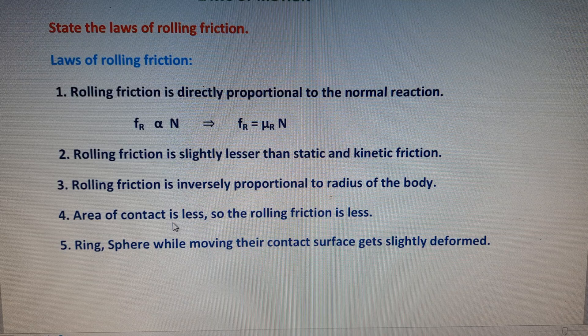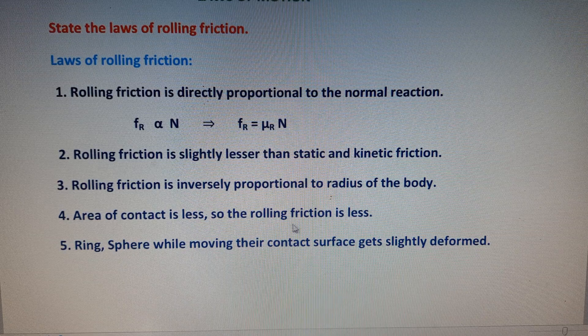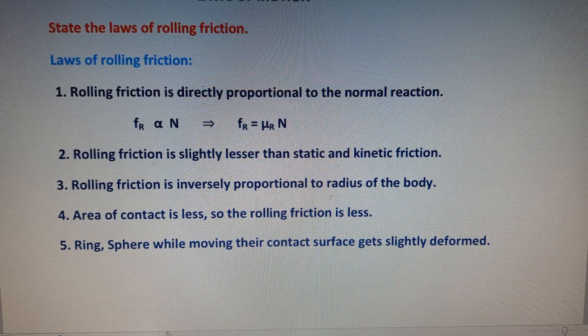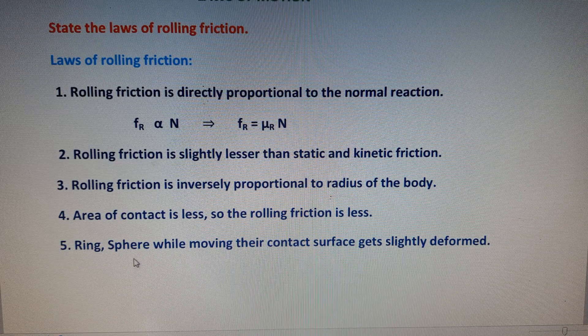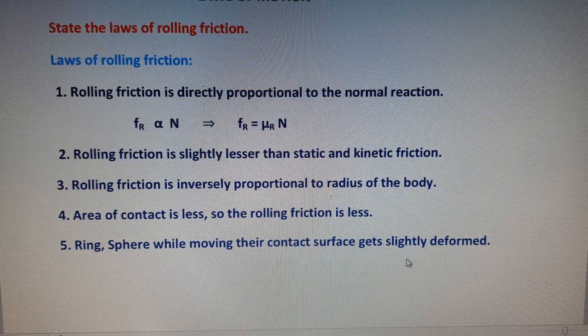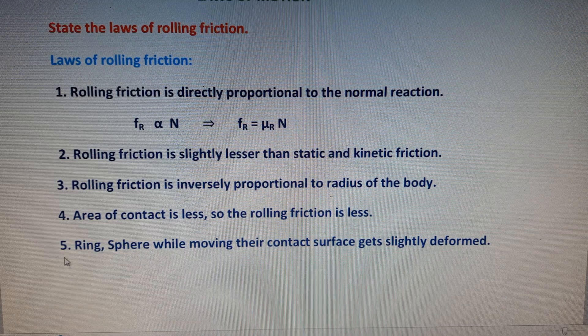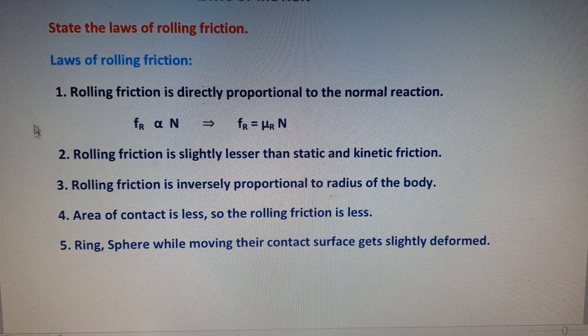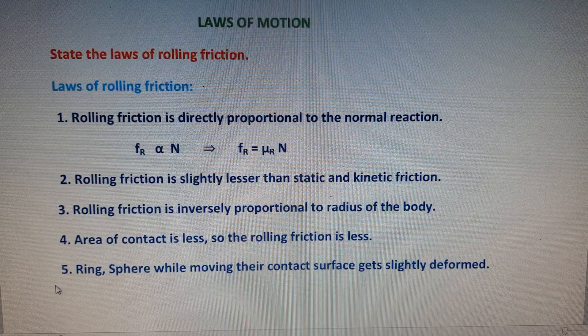And fifth one: ring, sphere while moving, their contact surface gets slightly deformed. So these are the five points. We can write any four points in the examination point of view.